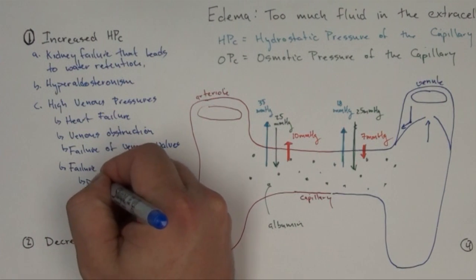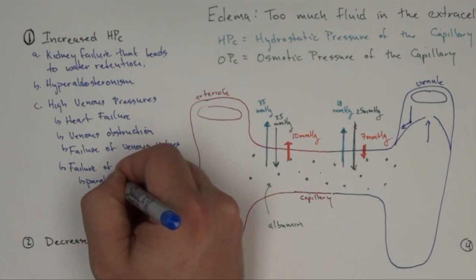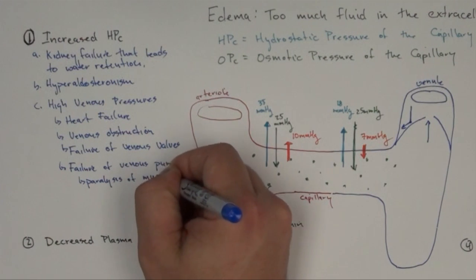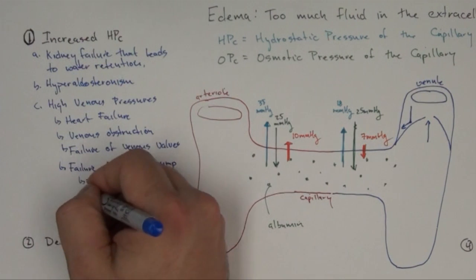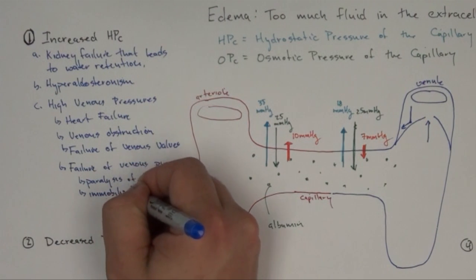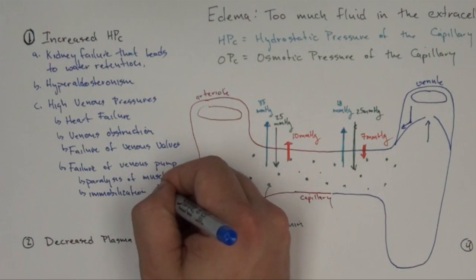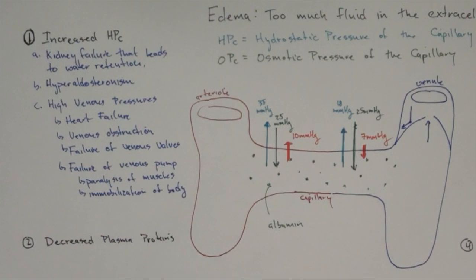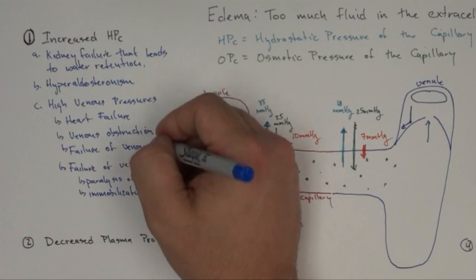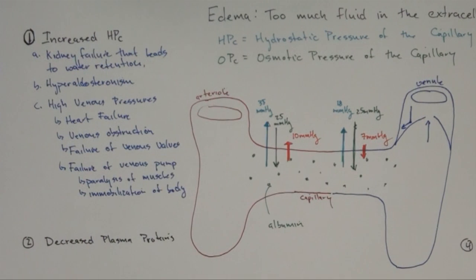Paralysis of muscles, or immobilization of a body part — such as in a coma or with a broken bone — can prevent the venous pump from working. The other related cause is failure of the venous valve, which similarly prevents proper venous return.